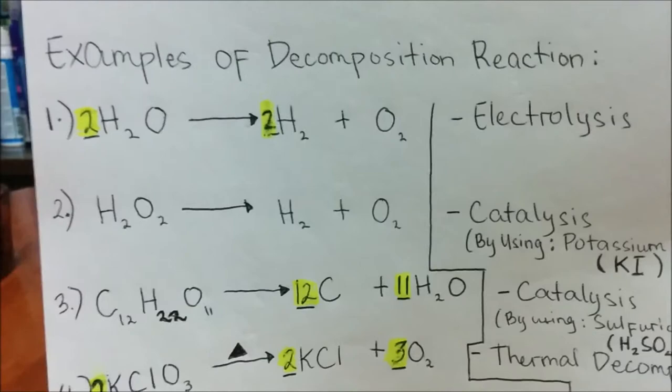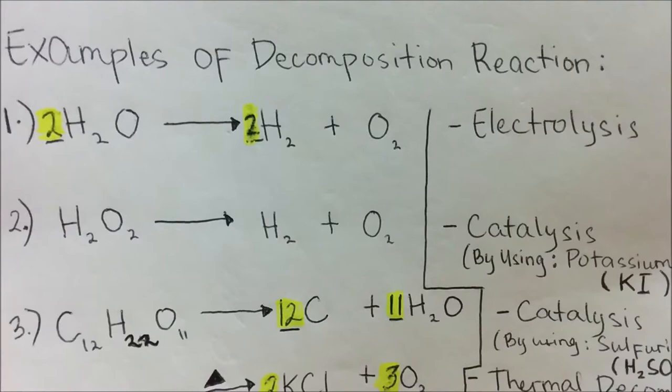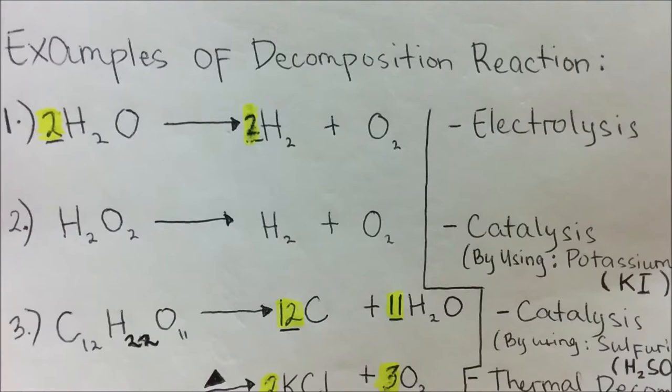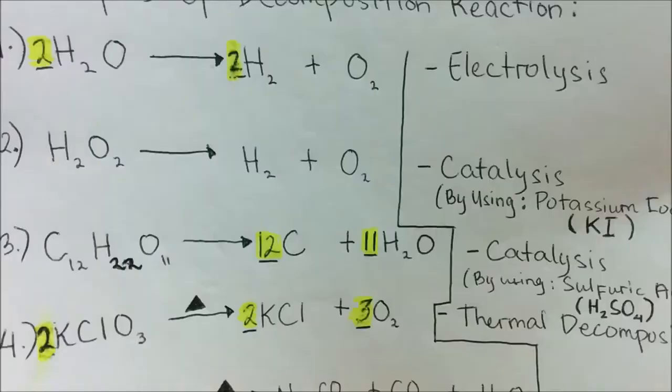My first example is water, or simply H2O. H2O is broken down into H2 plus O2. Notice that hydrogen and oxygen have a subscript 2 on the bottom because hydrogen and oxygen are part of the diatomic molecules. Water can be broken down through electrolysis, which involves electricity.